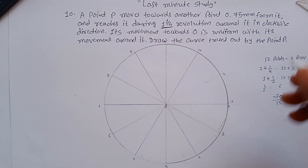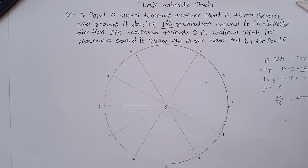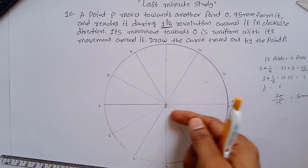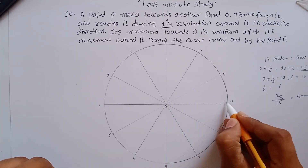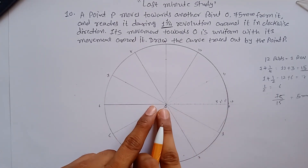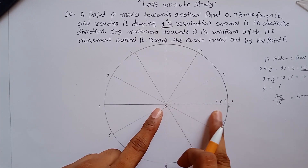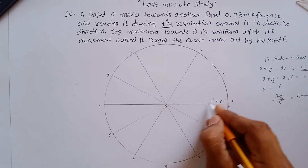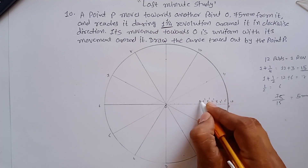Divide into 15 equal parts like this and give names to them. Since P point is moving towards O, you have to give names towards O — like 1 dash, 2 dash, 3 dash. If O point were moving towards P point, you would write your numbers in the other direction. Make sure to focus on the numbering, otherwise the whole system will be wrong.